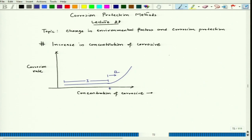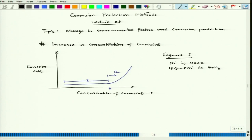This kind of behavior — segment one — can be noticed in cases such as nickel in NaOH or 18-8 stainless steel in HNO₃. In these cases, if we dip nickel in NaOH or 18-8 stainless steel in HNO₃, immediately those alloys or metals will get into the spontaneous passive zone. That passive zone will be achieved very quickly, and the material will maintain that passive zone over a wide range of concentration. This is also related to the mixed potential theory.